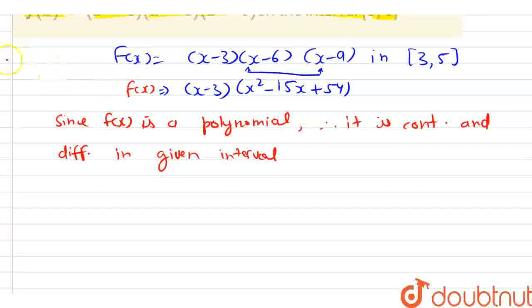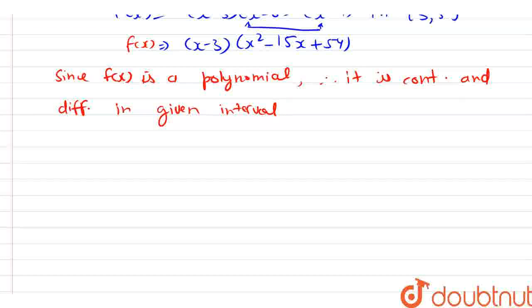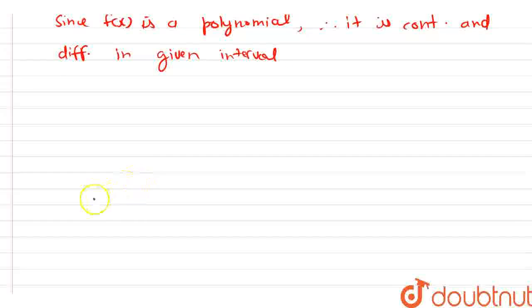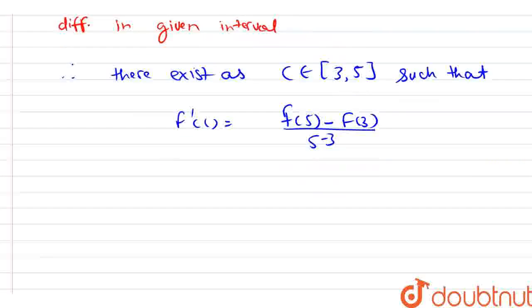Now, here both the conditions of the LMVT, that is Lagrange's mean value theorem, are satisfied. Therefore, there exists a c ∈ (3, 5) such that f'(c) = [f(5) - f(3)] / (5 - 3).